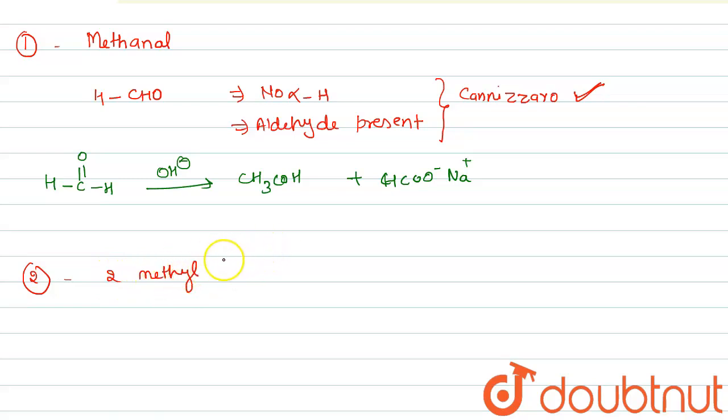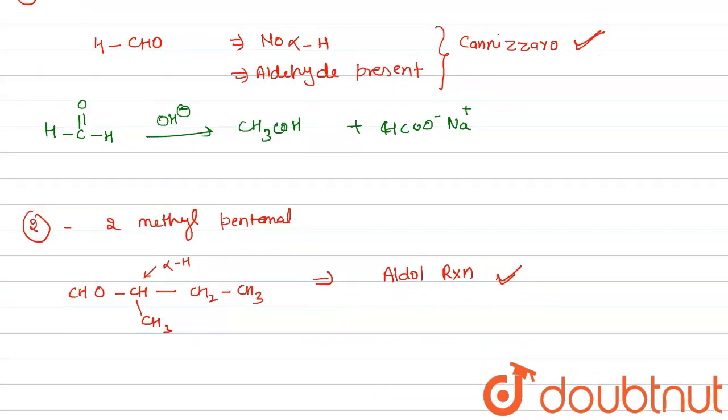Second one is 2-methyl propanal, CHO, CH, CH3, CH2, CH3. This has alpha hydrogen, so aldol reaction takes place.